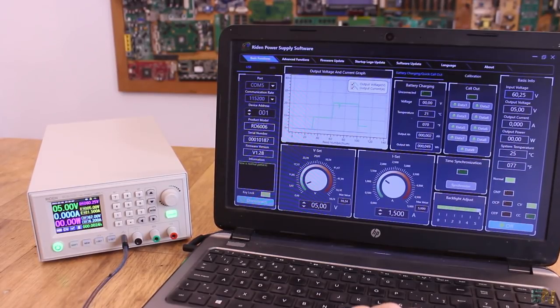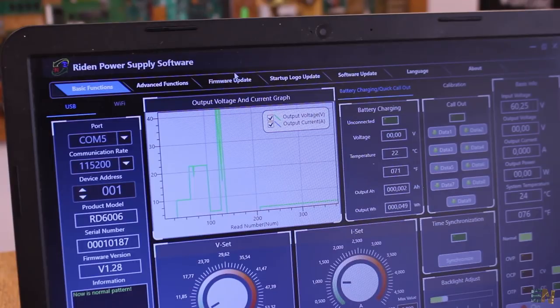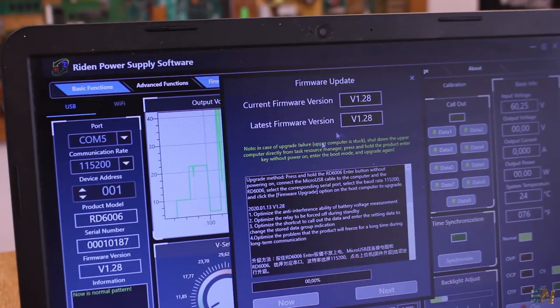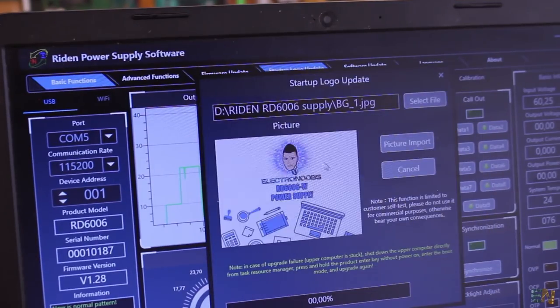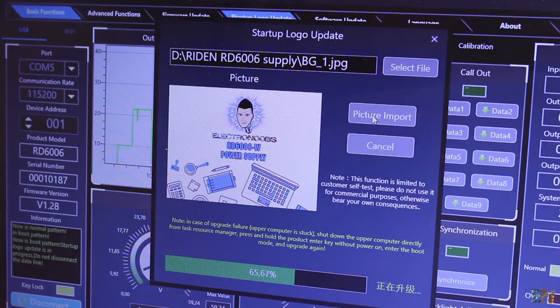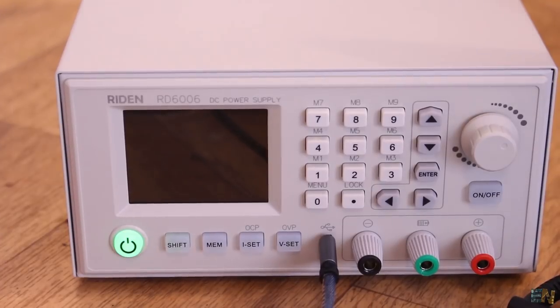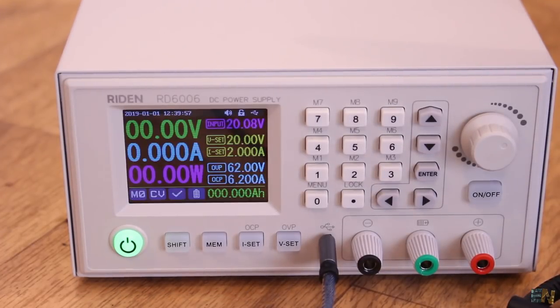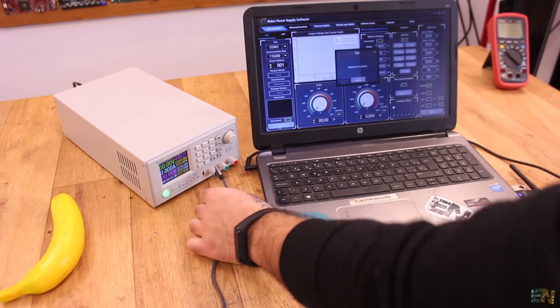You could even change the power-on logo or update the firmware. For that you have to enter the firmware update and install the newest version if you don't have the last one. Or you could enter the change logo button and here you can upload your own photo. This must be 320 by 240 pixels. Select the photo and press upload. The power supply will show the uploading process on the display. As you can see, I now have the latest version and my own photo on the boot screen. This is quite cool. That's it for the control, now let's make some tests.